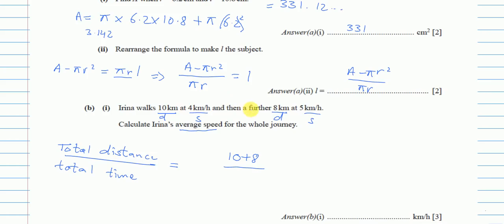We are not given time directly, but we can find it because time equals distance divided by speed. The distance for the first part was 10 kilometers divided by its speed of 4, and then a further 8 kilometers divided by its speed of 5.